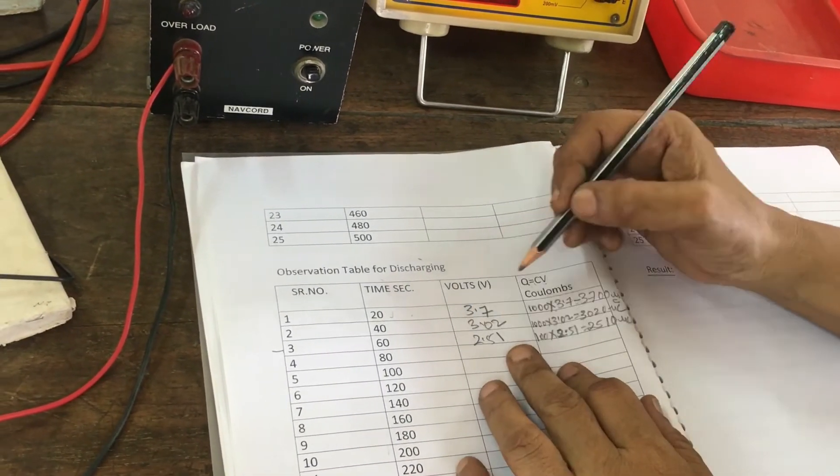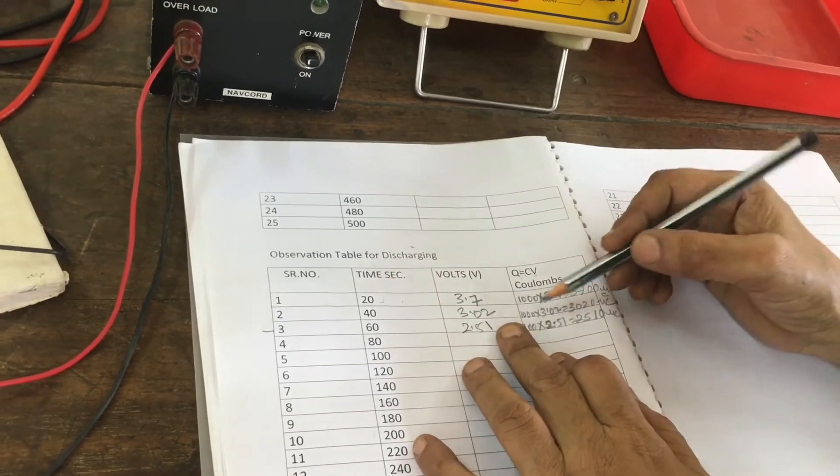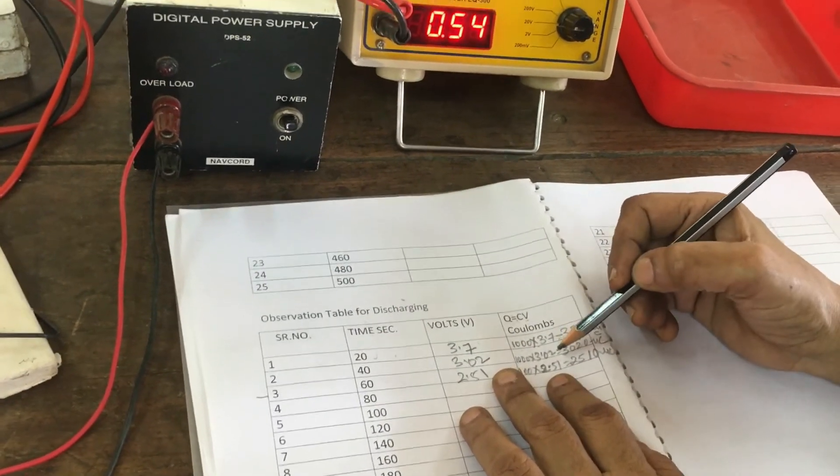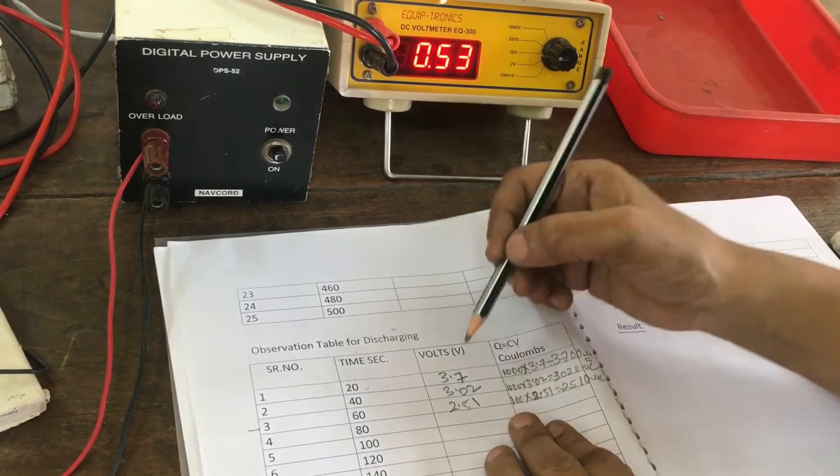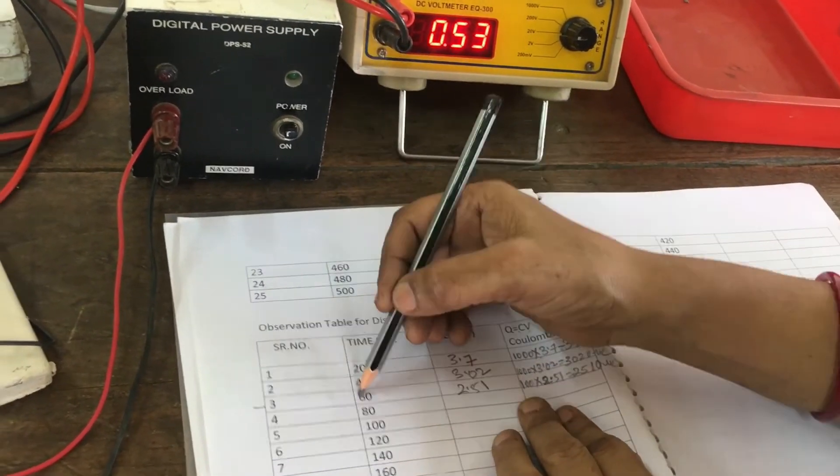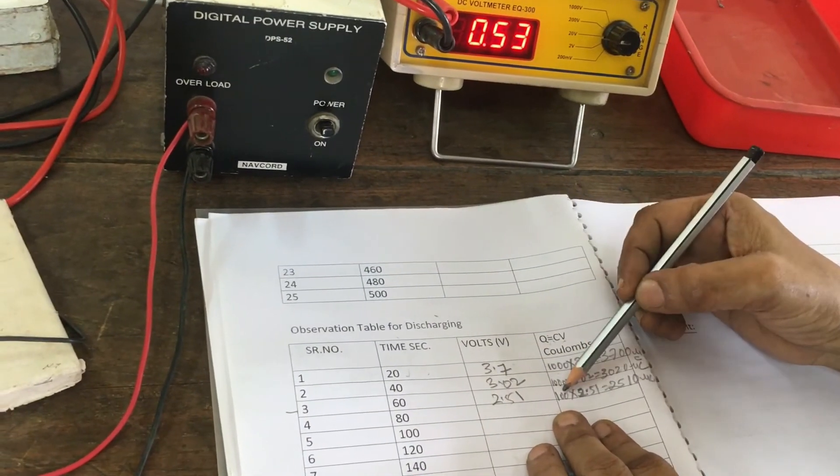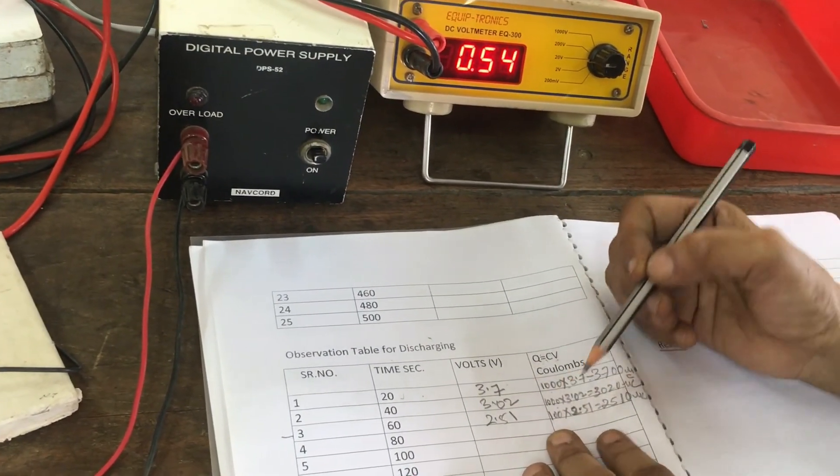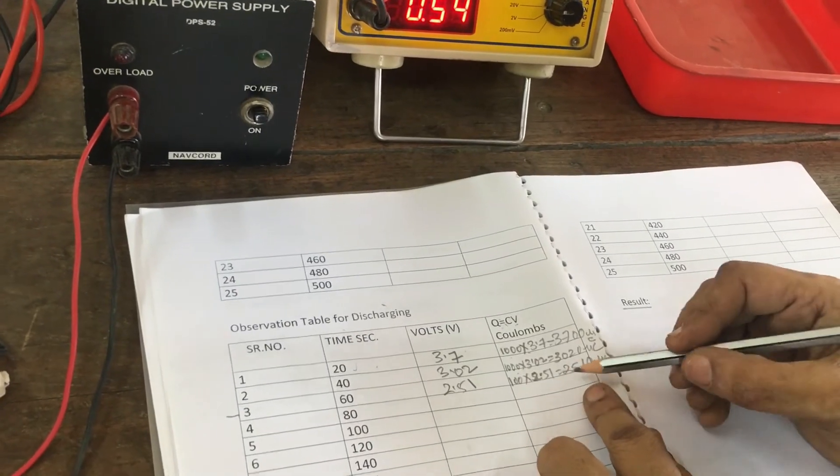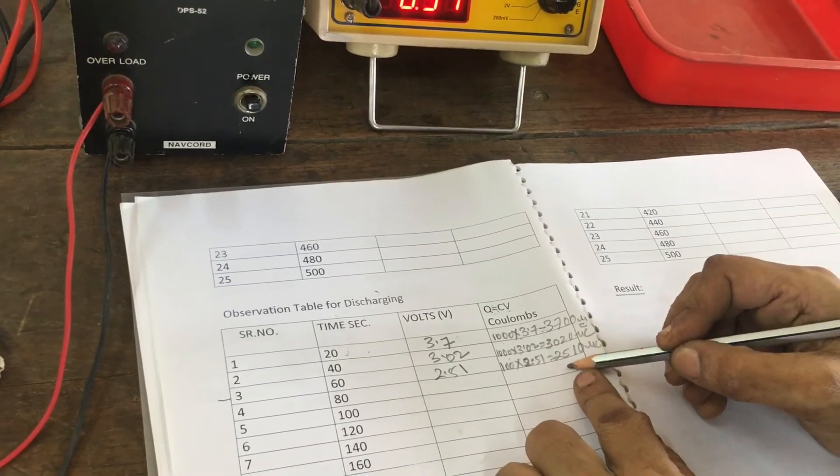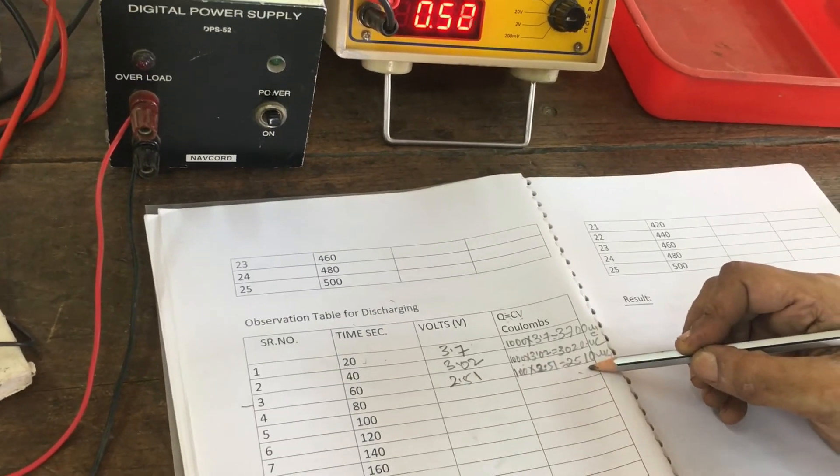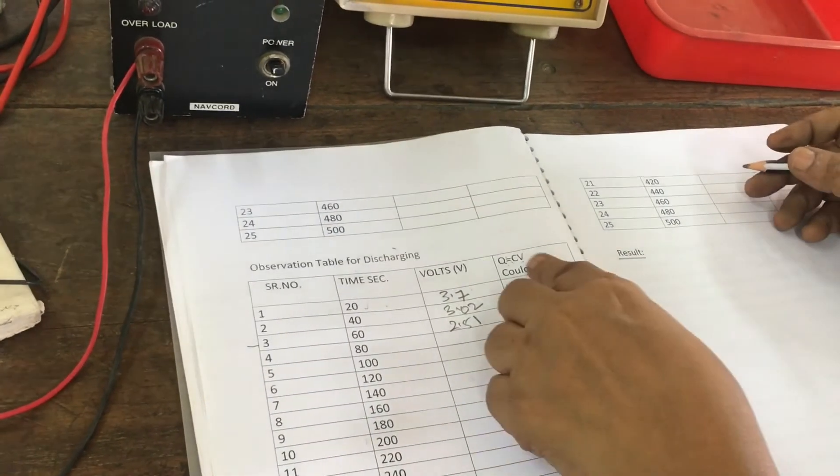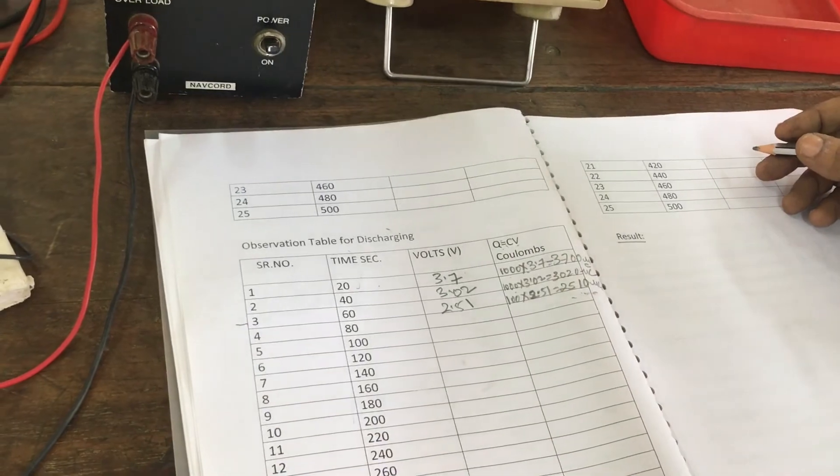Now, next, again, the voltage may be reduced. Now see here, 1000 multiplied by 3.02, it may be 3020 microcolumns. Next, third reading at 60 seconds: 1000 multiplied by 2.51 voltage, it may be 2510 microcolumns. In this way, the voltage may be reducing till 0 volts and your charges may be again reducing.